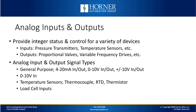On the analog side, we're talking about integer control or integer status, depending on whether it's an input or an output. For example, for inputs there's pressure transmitters, temperature sensors, etc. For outputs, you could be supplying a speed signal to a variable frequency drive. There are many different signal types for analog inputs and outputs. The general purpose ones are typically 4 to 20 milliamps or 0 to 10 volts. Sometimes you'll see plus or minus 10 volts, but not very often. There are many supported temperature sensors, including thermocouples, RTDs, and thermistors.